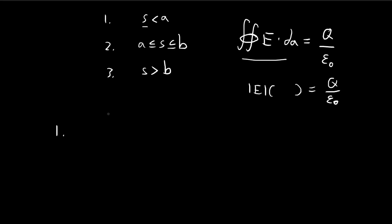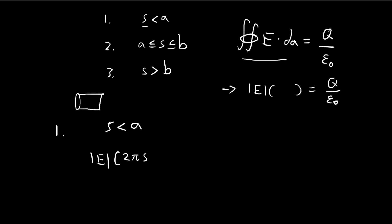For the first case, when s is smaller than a, we multiply the electric field by the surface area. The surface area of our Gaussian cylinder is 2πs — the circumference — times l, an arbitrary length. So we have a cylinder of length l as our Gaussian surface, and that is our surface area.